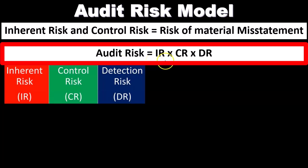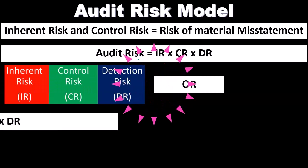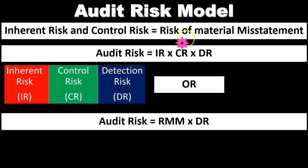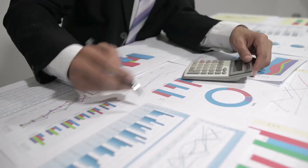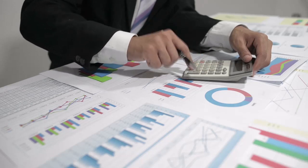Audit risk equals inherent risk times control risk times detection risk. We can also express this as: audit risk equals risk of material misstatement times detection risk. The risk of material misstatement includes both inherent risk and control risk — the company-side factors — while detection risk represents the auditor's side: whether our audit procedures successfully detect any existing misstatement.